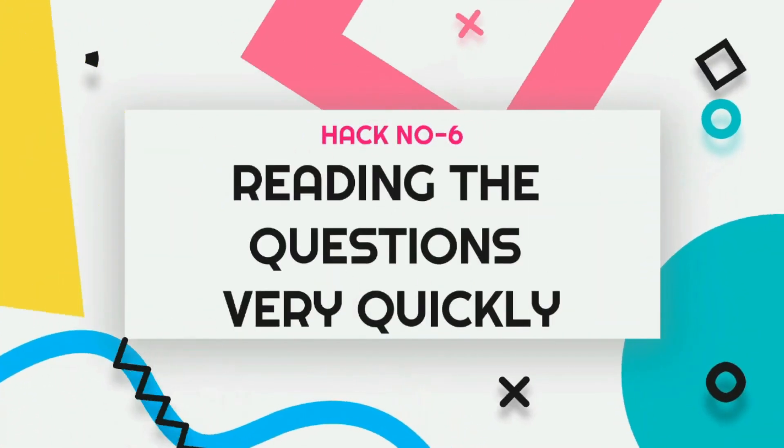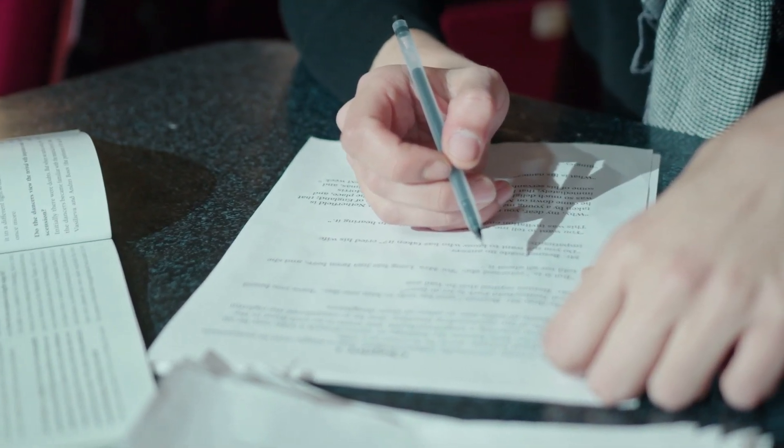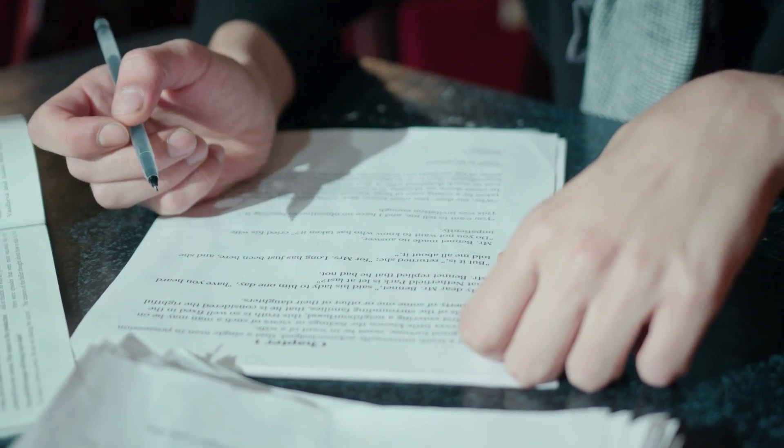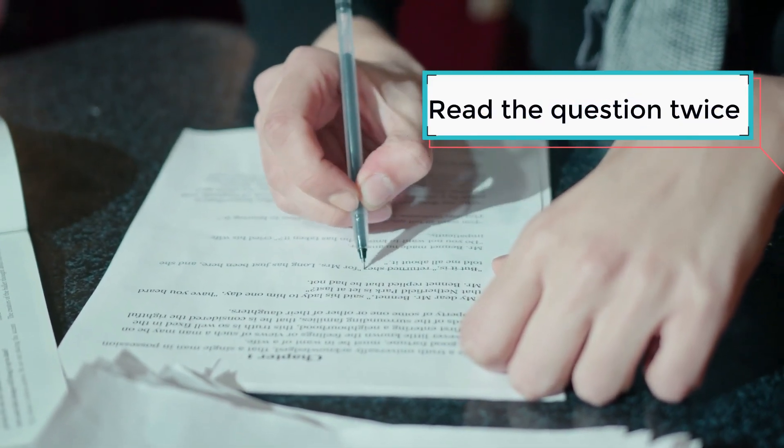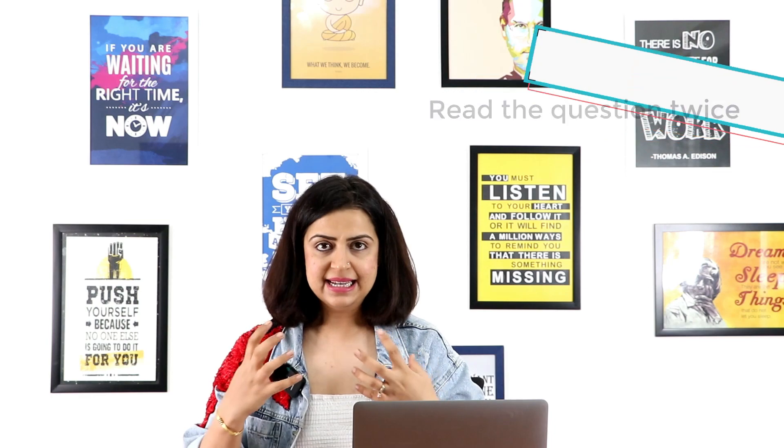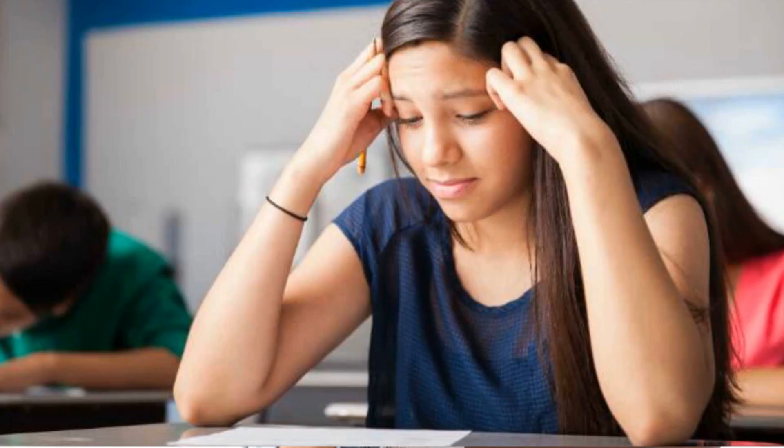Next mistake is reading the question very quickly. So, I am sure hum sab log time bachana chahte hai exam mein. But, kya aap ye sabse badi mistake kar rahe hai exam mein and that is ki hum question ko bahut jaldi padhte hai, so that hum usko jaldi se answer kar paye. No, invest some time in reading the question twice. Aisa karne se kyunki question ko bahut twisted form mein puchha hota hai, taki students confused ho jayen. Toh, aapko confused nahi hona hai, question ko do baar padhna hai, taki you know what is the catch in the question.